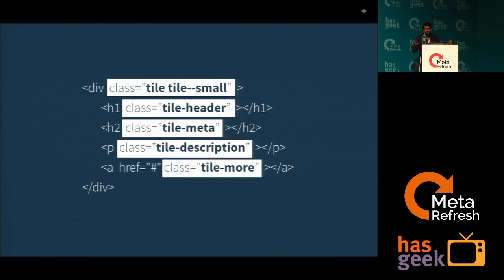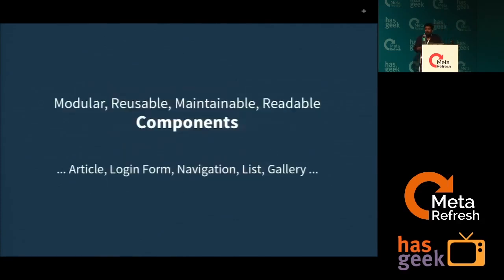This is a tile, it has a header, a meta tag, a description and a modal — it's actually readable. If you give it to any backend developer or anybody, they can easily understand it and it's more meaningful. Like this, you can have a very large-scale application, make different components and reuse them across it. For example, a login form, articles, navigation — if you have a site with multiple navigations, you can just create a component and reuse it. You can try it, make different components, and use them across any of your projects. You can keep your CSS component-based. This is actually the biggest takeaway I got from the last MetaRefresh, and it's saved my work.